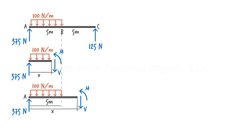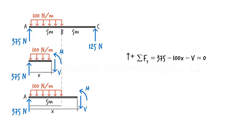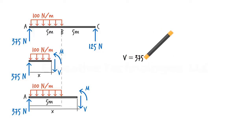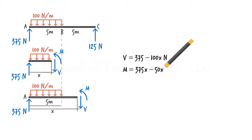Step 4: write the equilibrium equations for each free body diagram and solve for the unknowns. For the first free body diagram, summing forces in the y-direction gives 375 − 100x − V = 0, and summing moments about the cut point gives 375x − 100x(x/2) − M = 0. Solving: V = 375 − 100x and M = 375x − 50x². Both equations are valid for x between 0 and 5.